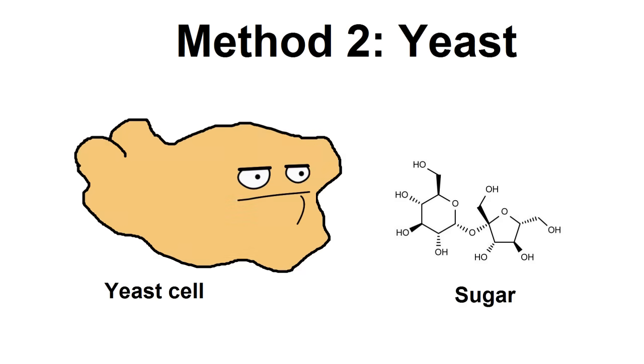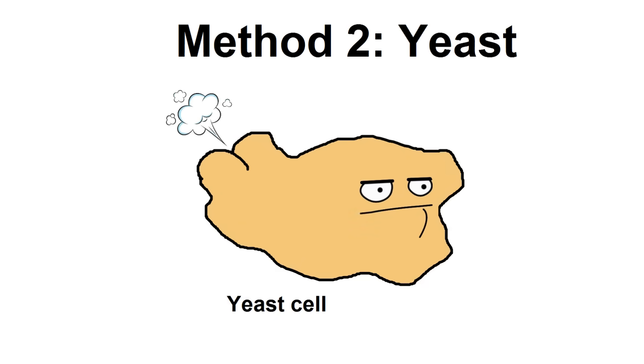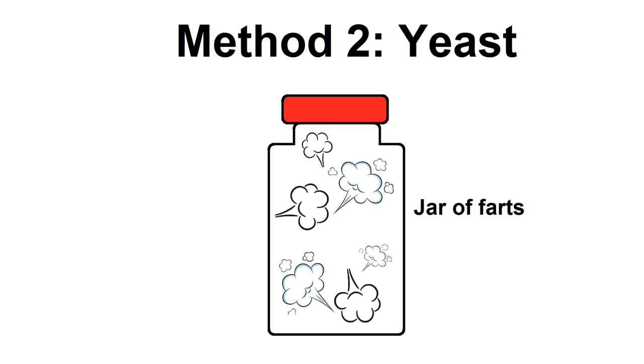Method 2: Letting yeast consume sugar in a closed container and collecting the exhaust from the digestion, which is CO2 gas.